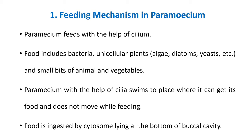Mostly the Paramecium food includes bacteria, unicellular plants, and small bits of animal and vegetable matter. Paramecium, with the help of cilia, swims to the place where it can get its food, while it does not move at the time of feeding. Whenever feeding takes place, it remains stagnant, but the rest of the time it swims to where it can get food. Food is ingested with the help of the cytostome lying at the bottom of the buccal cavity.